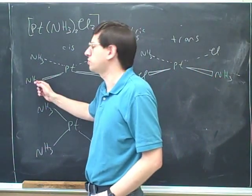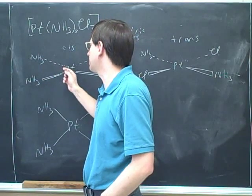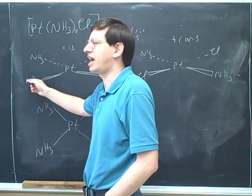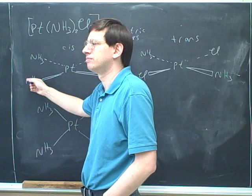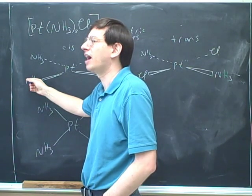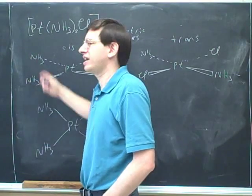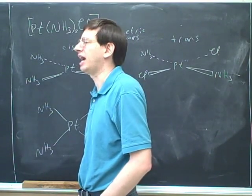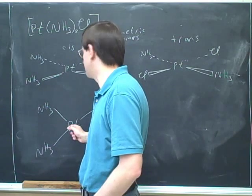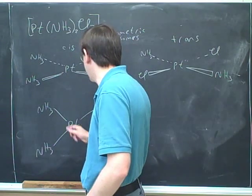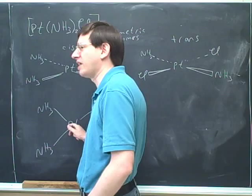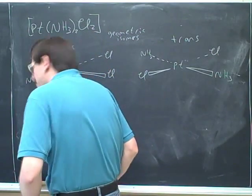What's the bond angle between these two ammonias? If you went from one ammonia to the center to another ammonia, what would be that angle? 107? I think you're thinking of a tetrahedron. But remember, this is square planar. So what would be the bond angle? 90? Yeah. That's a little bit hard to see in this picture. It should be easier to see in this picture.